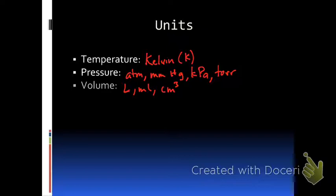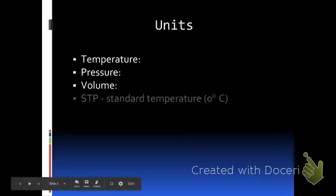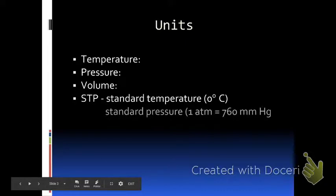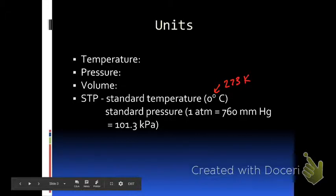In word problems we have to identify what the temperature, pressure, and volume are. If you know these units it will help you determine which type of variable you're looking at. You'll also hear something called STP — standard temperature and pressure. Standard temperature is zero degrees Celsius, which is 273 Kelvin, and standard pressure is one atmosphere, which equals 760 millimeters of mercury or torr, or 101.3 kilopascals.